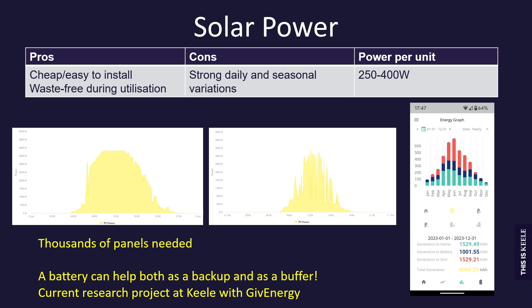Batteries can act both as a backup for power failures in HPCs and as a buffer when considering renewable energy sources. The ballpark figure is around 400 watts per unit — if you want to power a large HPC system, you're going to need thousands of solar panels and quite a lot of space, maybe not exactly where your data center is depending on the weather.